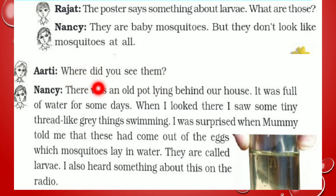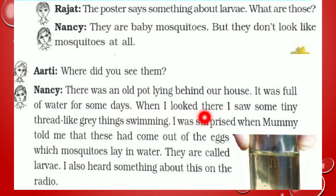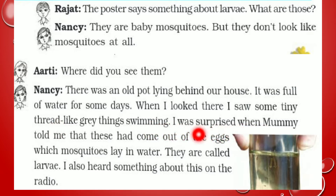Where did you see them? तुमने इन्हें कहाँ देखा? Nancy कहती है — there was an old pot lying behind our house. हमारे घर के पीछे एक पुराना pot पड़ा हुआ था. It was full of water for some days. कुछ दिनों से पानी से भर गया था. When I looked there, I saw some tiny thread-like grey things swimming. मैंने देखा कि उसके अंदर grey color की कुछ चीजें तैर रही हैं. I was surprised. मैं हैरान थी. When mummy told me — जब mummy ने मुझे बताया — that these had come out of the eggs which mosquitoes lay in water. ये अंडों में से निकले हैं जो mosquitoes ने इस पानी में दिए थे. They are called larva. इन्हें larva कहते हैं.